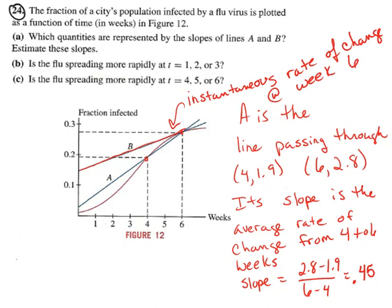So now part B then says, is the flu spreading more rapidly at, oh, I'm sorry, before I do that it says, estimate the slope of B. So you kind of have to just guess. It looks like at 2 weeks you're at kind of the same place you were at 4 weeks. At 2 weeks it looks like you're at the 1.9. And then at 6 weeks you're at the 2.8.